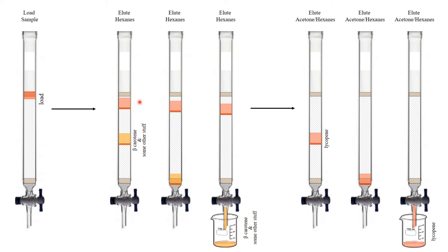The lycopene tends to hold back and not move as fast. So as I keep on draining and adding hexanes to the top here, I eventually drain my beta-carotene and these other carotenoids down and I collect them in a small beaker. I want to save these just in case I want to analyze these to see what's in them.